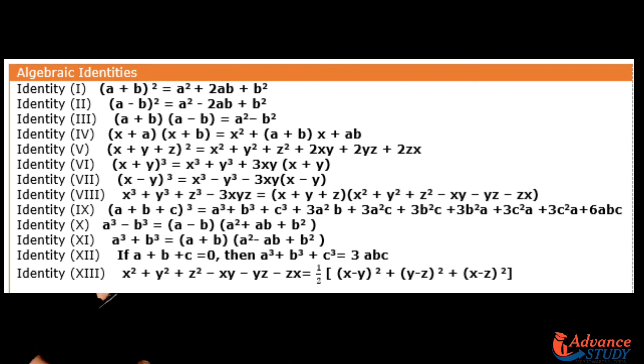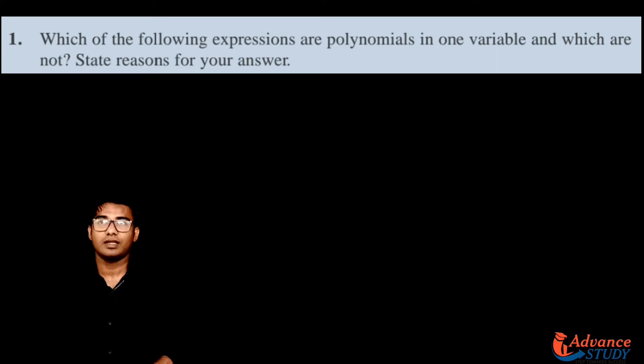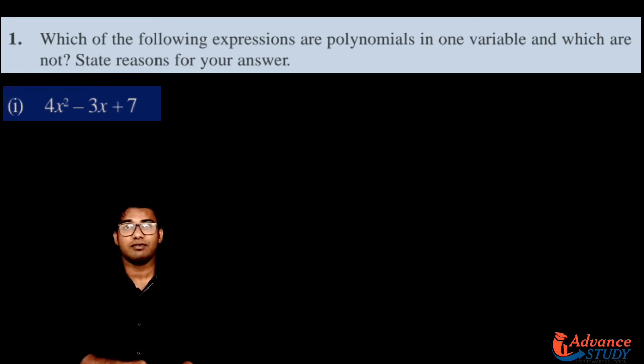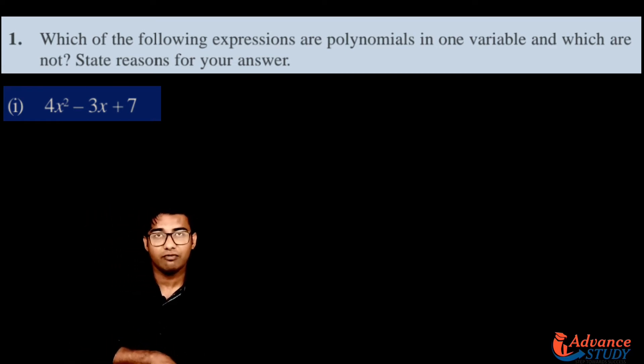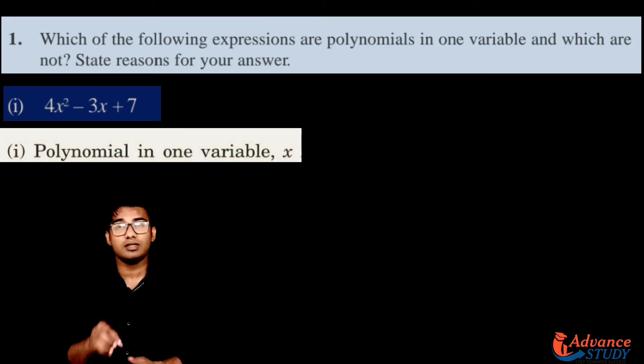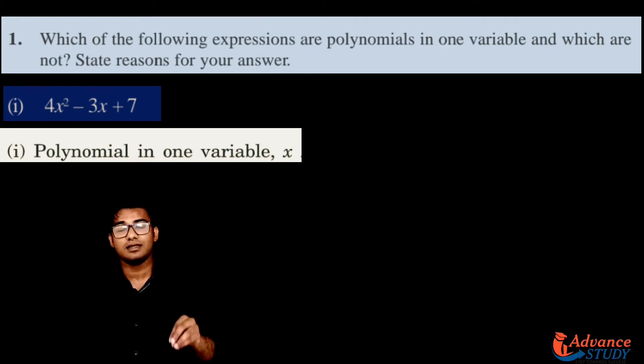We have first exercise, that is exercise 2.1: which of the following expressions are polynomial in one variable and which are not? State reasons for your answer. The very first question is 4x² minus 3x plus 7. This is a polynomial in one variable because there is only x.